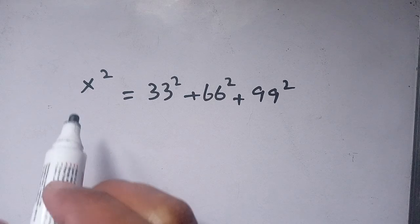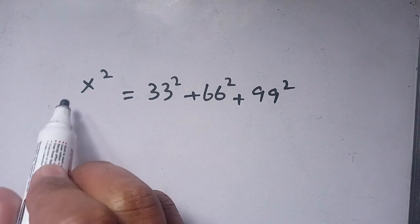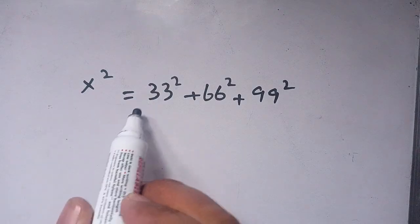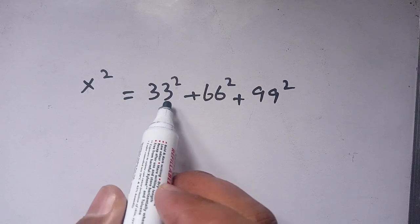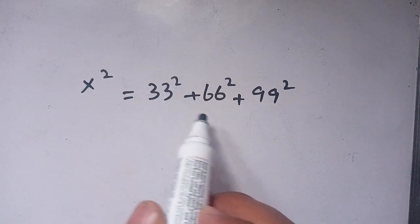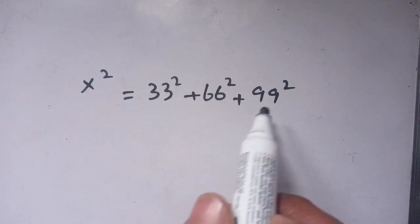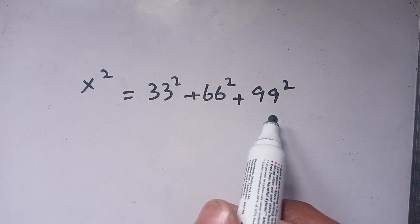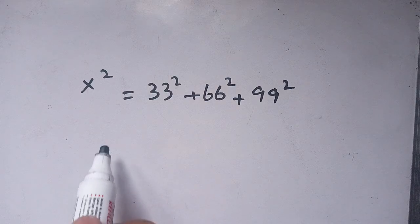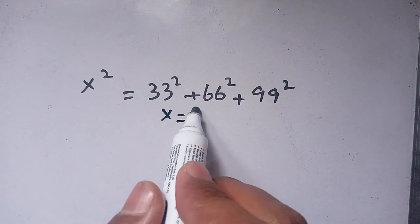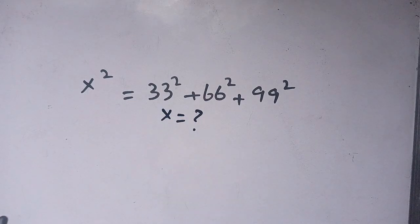Hello everyone. In today's video we are going to solve this square problem: x squared is equal to 33 squared plus 66 squared plus 99 squared, and we have to find the value of x which satisfies this equation.